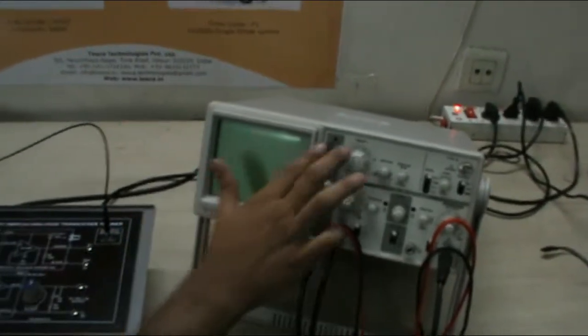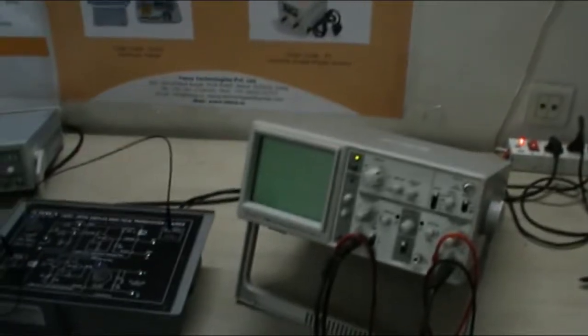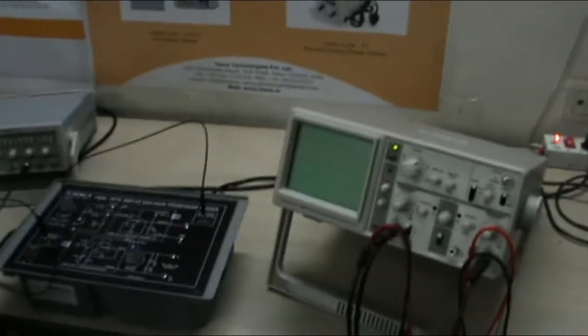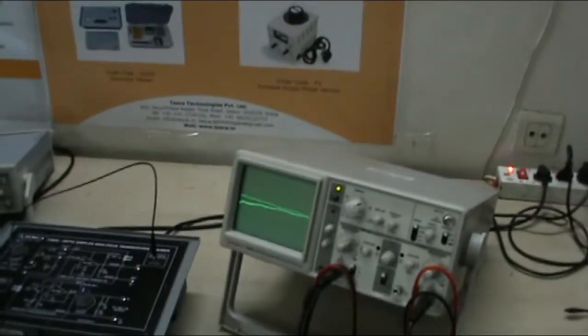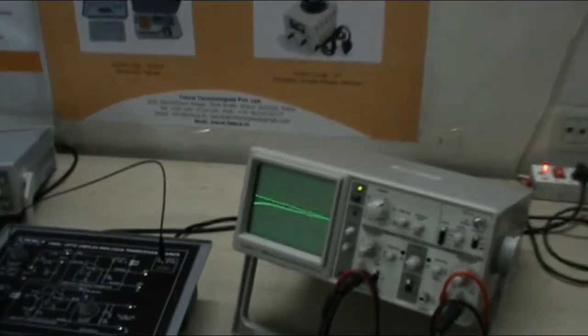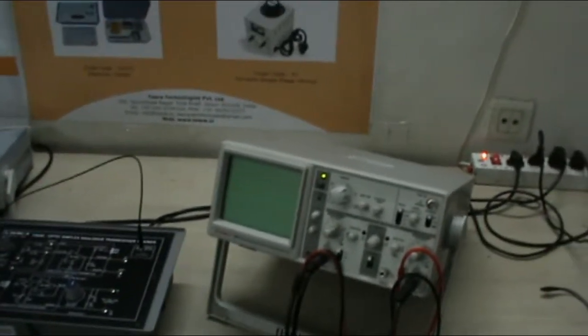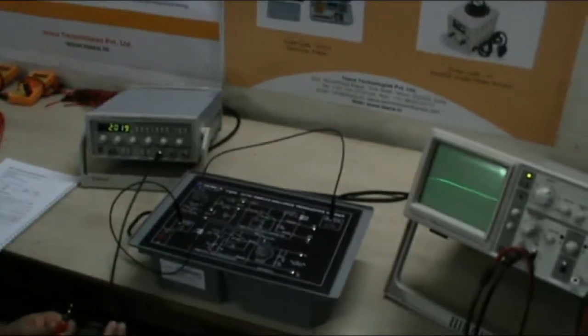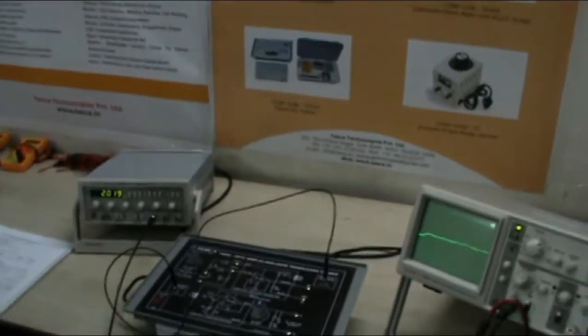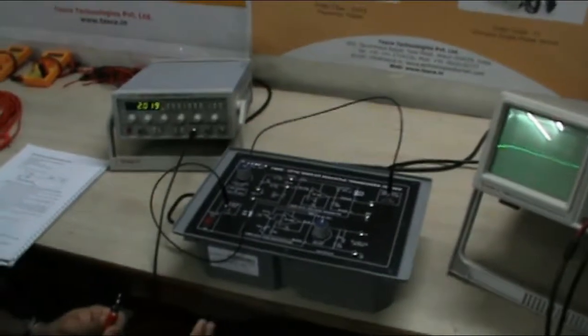Now first of all I take the input. Initially I have to take the input as around 100 Hz and 2V peak to peak. We have to vary our output from 10 Hz to 500 kHz and voltage to 10 mV peak to peak to 2 V peak to peak.